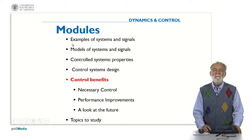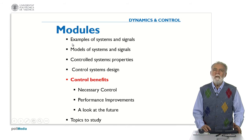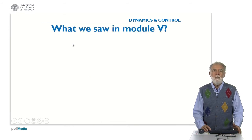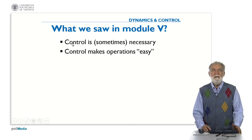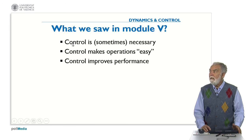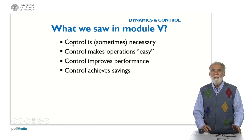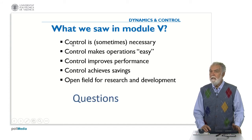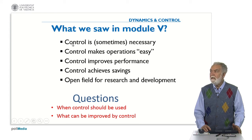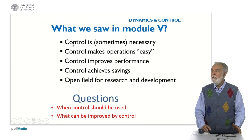We saw that in some cases the control is necessary, that we can improve the performance, and we have many options in the future. This is what we saw in module five: the control is sometimes necessary, it makes operations easier, control improves performance, control achieves some savings, and it opens the field for research and development. Today the questions we are going to face are: when should control be used, and what can be improved by using control.